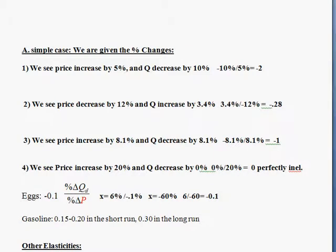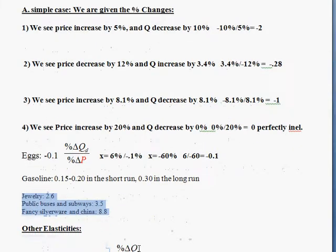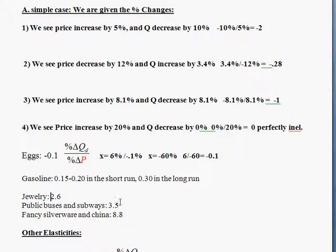Now things that are more elastic, let's look at some things that have higher elasticities here. Jewelry, elasticity of 2.6, again minus 2.6. Buses and subways have been estimated at 3.5. Fancy silverware and china, minus 8.8. These things are very elastic because jewelry, some people would say it's not a necessity. You don't have to have it. There are good alternatives to buying jewelry. One is just don't buy it, or buy something cheaper if the price goes up, or just cut back altogether. You don't really have to have it.